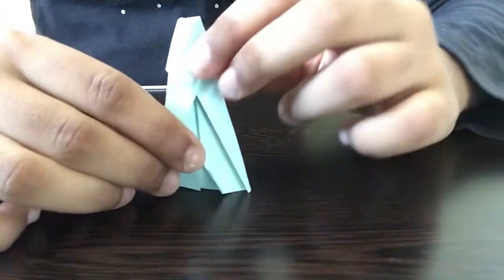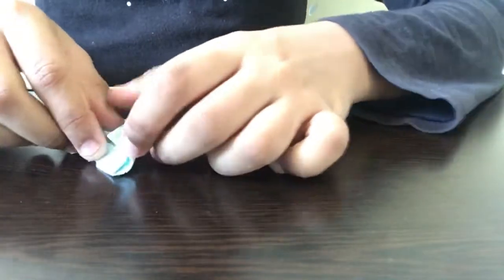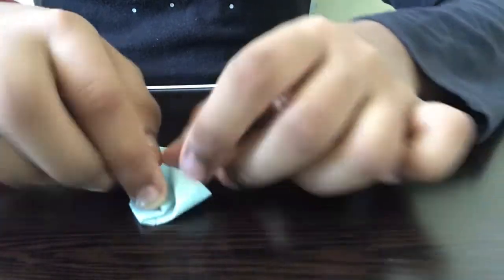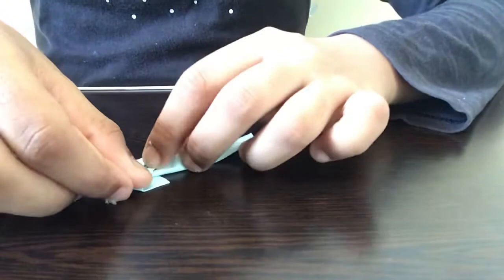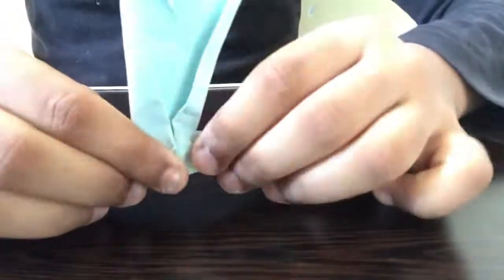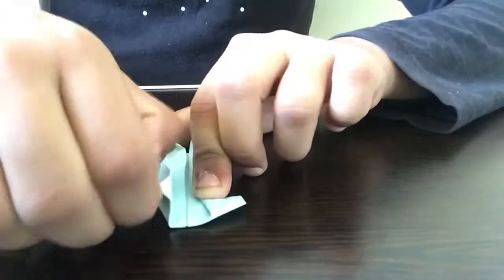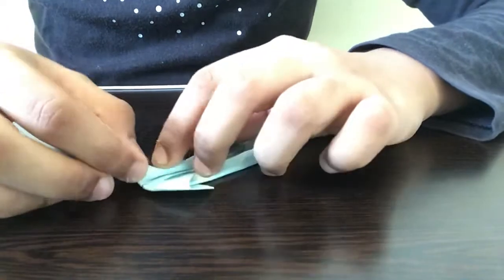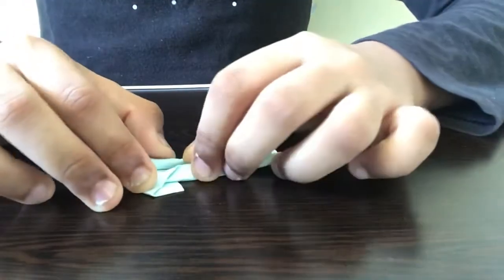Next, I'm opening one side of the paper here, opening this part, and pressing it down like this. Repeat the same step on the opposite side as well. Open this part and press it down.